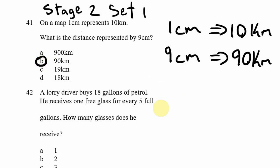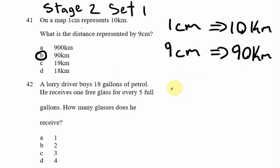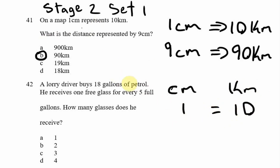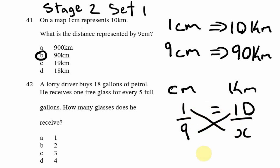We could also set this up using proportion. The units we are comparing are centimeters and kilometers. On the map, one centimeter is equal to 10 kilometers, so we want to know what nine centimeters is in kilometers using the same scale. Cross-multiplying: one times x equals x, and nine times 10 is 90, so x equals 90 kilometers. Therefore our answer is option B.